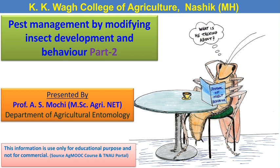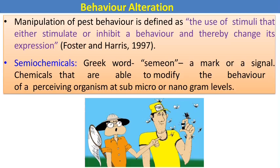In semiochemicals, the pheromones are the most important part of insect behavior. The manipulation of pest behavior is defined as the use of stimuli that either stimulate or inhibit a behavior and thereby change its expressions.